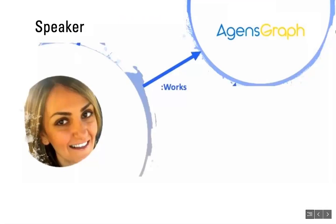When asked what attracted her most to using the graph database when she joined Bitnine, Aya explained that she didn't have much experience with graph databases at first. Through using AgensGraph, she discovered it offered a completely different perspective regarding databases. Through the graph structure, she was able to see how all those connected data have meaning and how to extract more meaning from them.